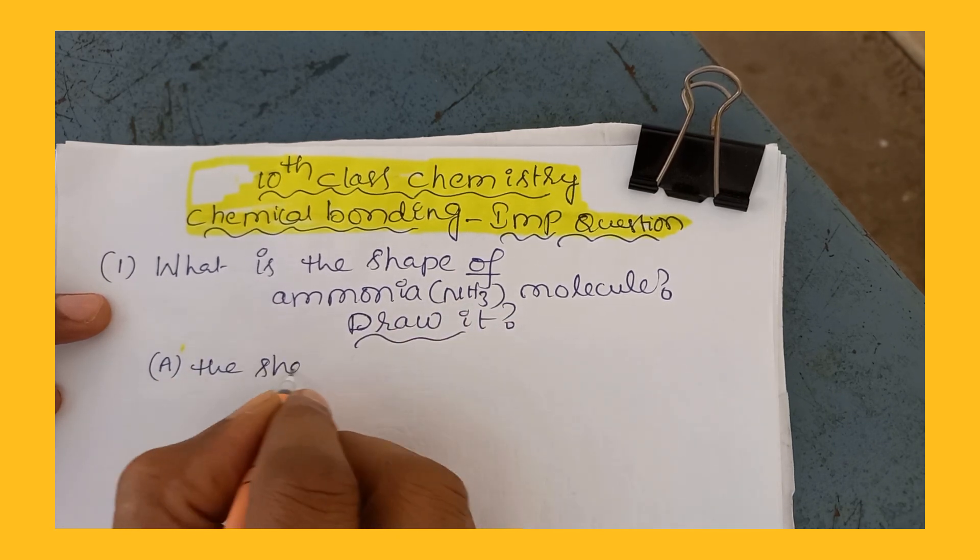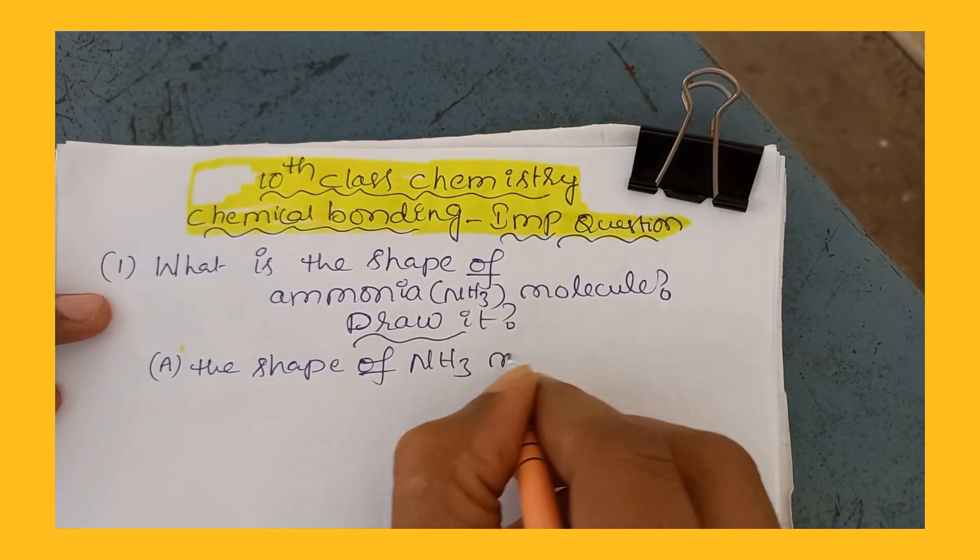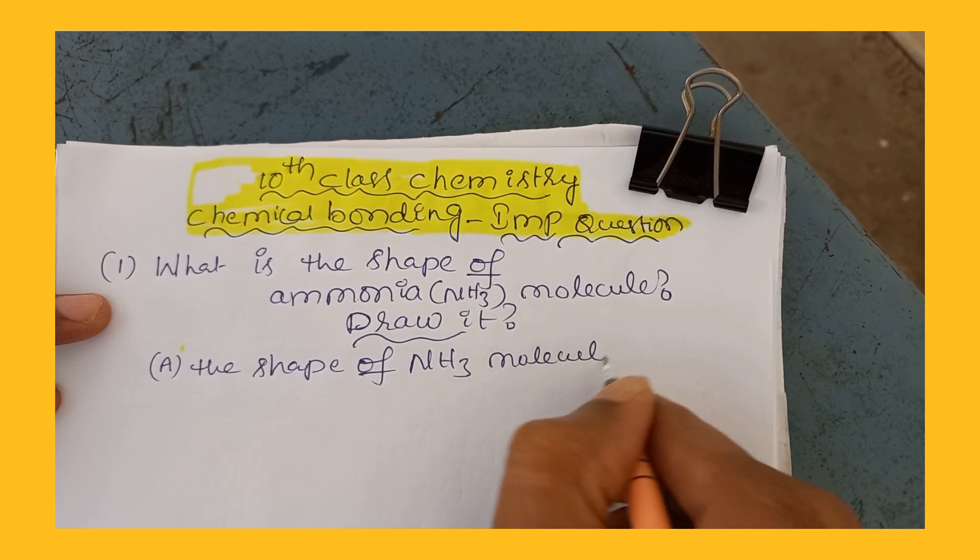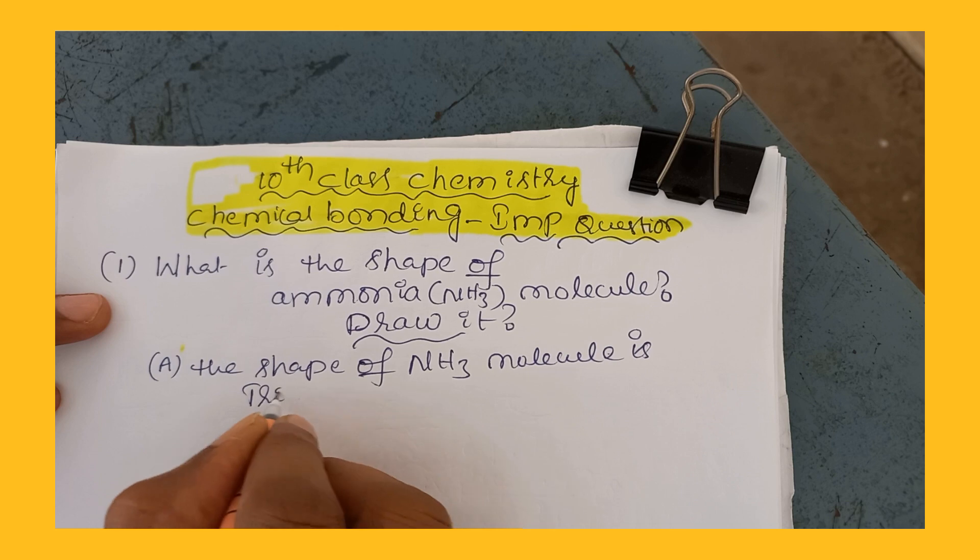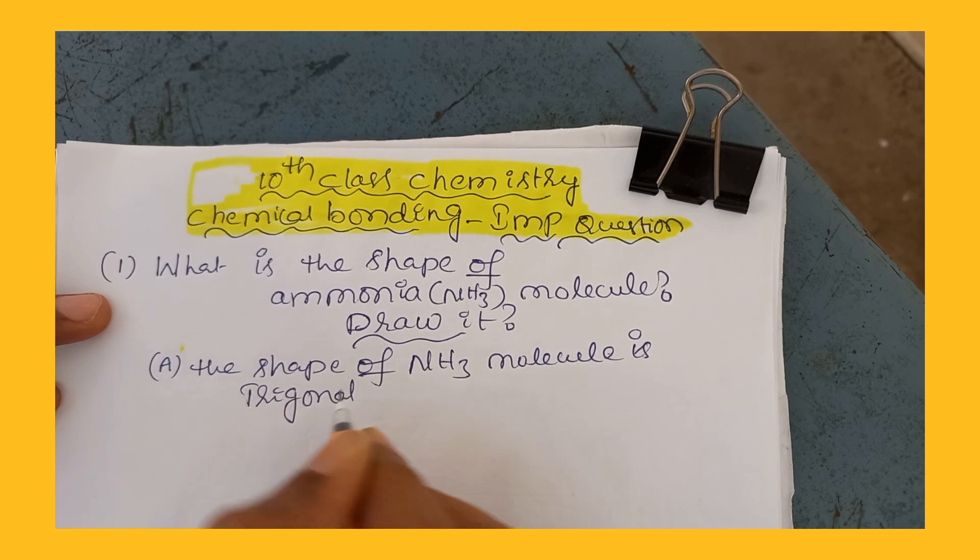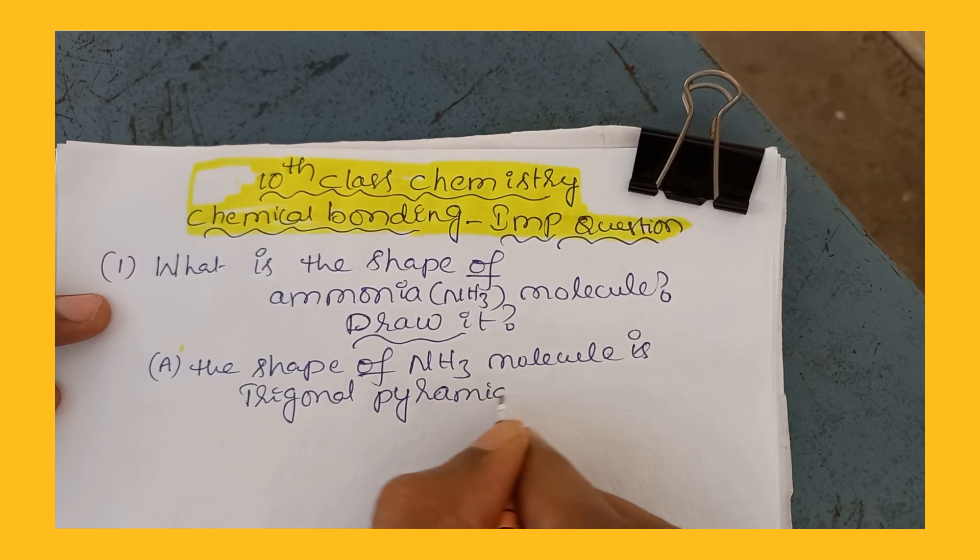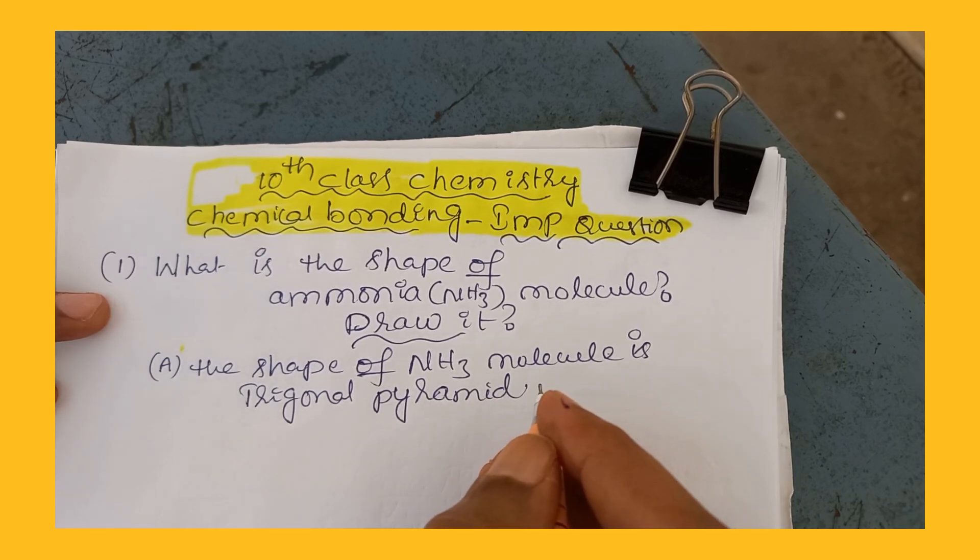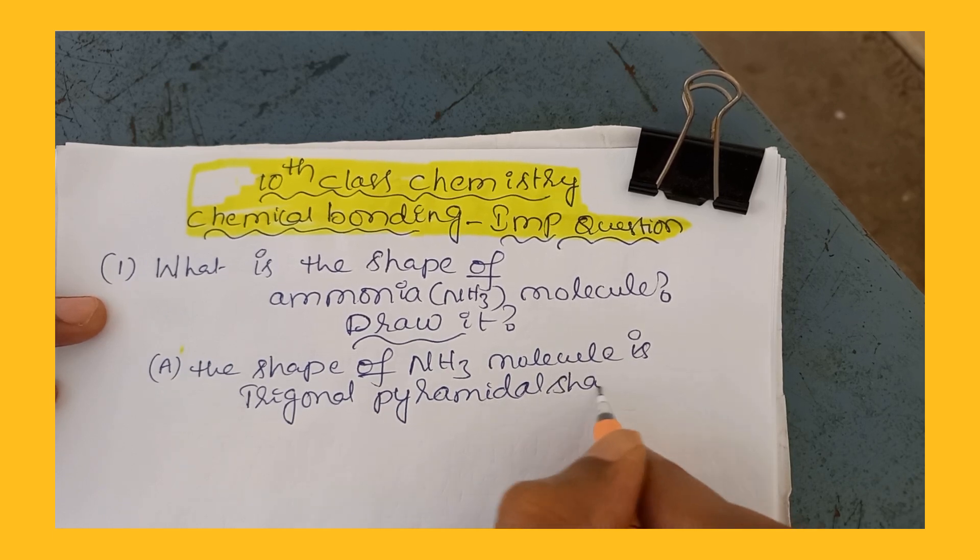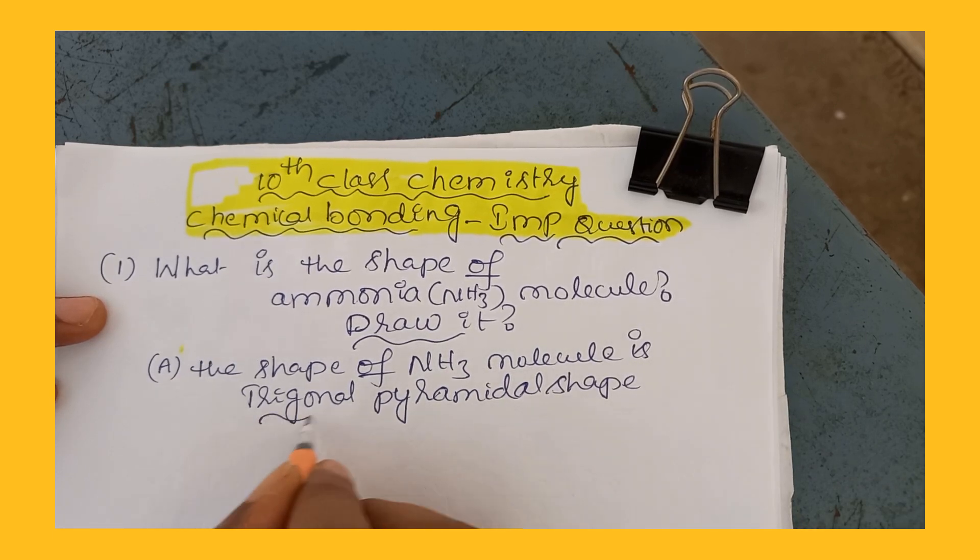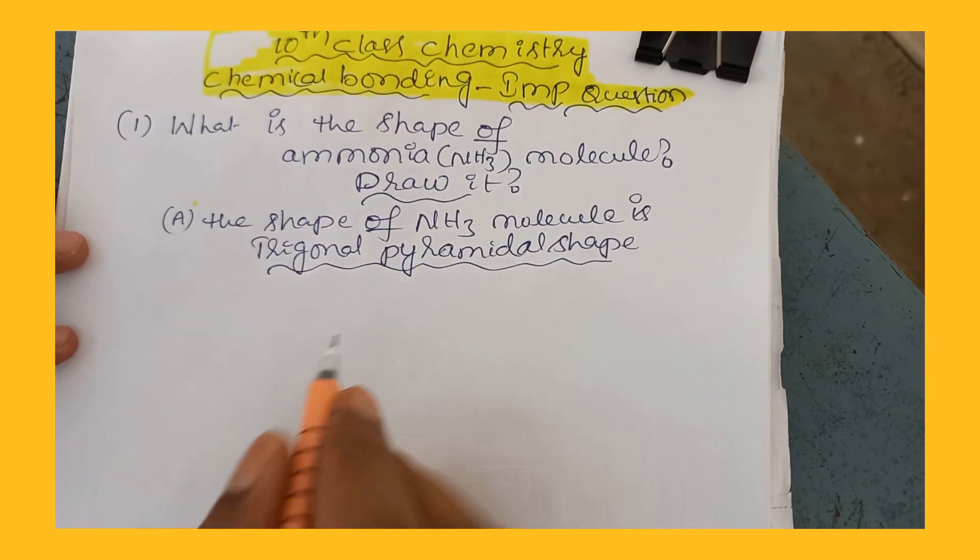The shape of NH3 molecule is trigonal pyramidal shape. Trigonal pyramidal shape. Now what is the shape of this one? We want to draw it.